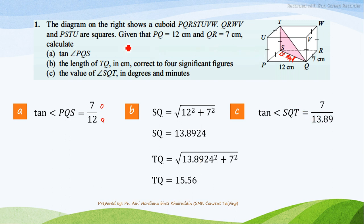Part C, the value of angle SQT in degrees and minutes. So angle SQT is here. So you can use tangent, which is opposite over adjacent. So opposite of this angle is 7 and the adjacent is 13.89. So angle SQT equals to 26 degrees 45 minutes.